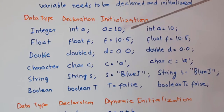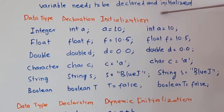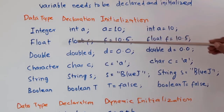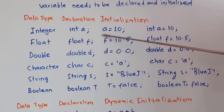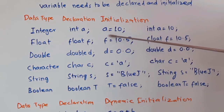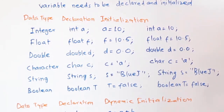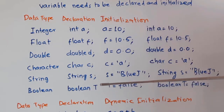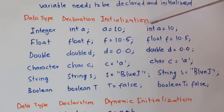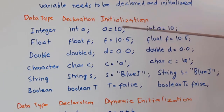After declaring a variable, you can store data inside it. There are two ways: static initialization and dynamic initialization. Static initialization means we give the value at the time of declaration. For example: 'int a = 10' — you can write the declaration and assignment in two lines or combine into a single line. For float: 'float f = 10.5'. For double: 'double d = 0.0'. For char: 'char c = \'a\''. For String: 'String s = "hello"'. For boolean: 'boolean t = false'.